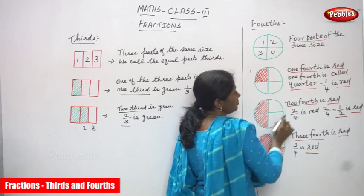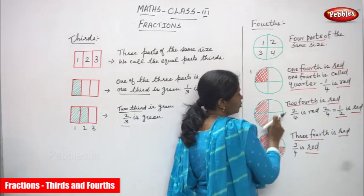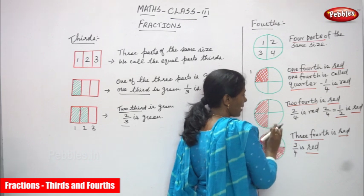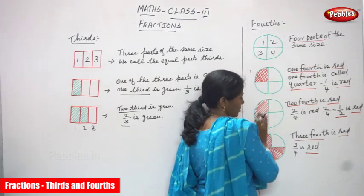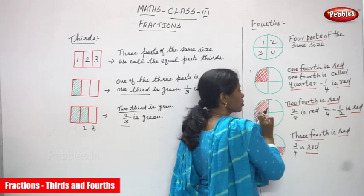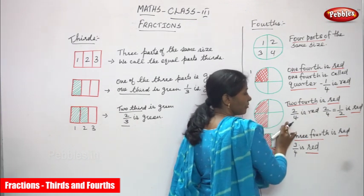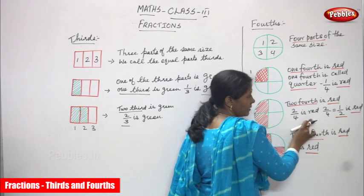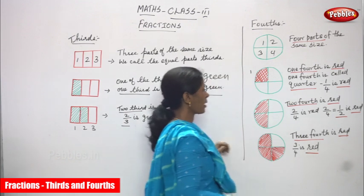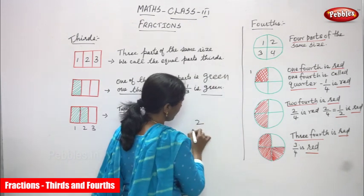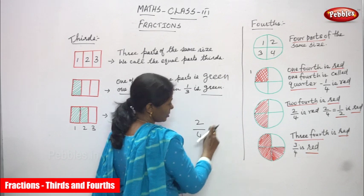In the second diagram, two fourths is in red color. The same diagram is cut into four equal parts. I shaded only two parts in red. So two fourths is red in color. In fraction, two by four is red in color.